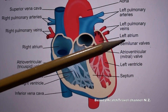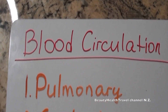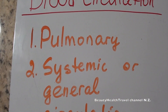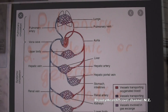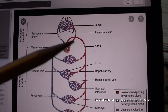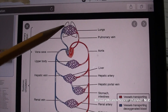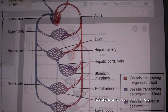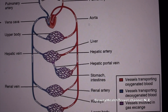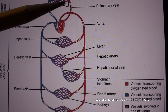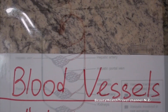The right atrium and the left atrium receive blood. Blood circulation includes pulmonary circulation and systemic or general circulation. In pulmonary blood circulation, the blood goes from the heart to the lungs to be purified. In systemic blood circulation, the blood is supplied throughout the body to the other organs.